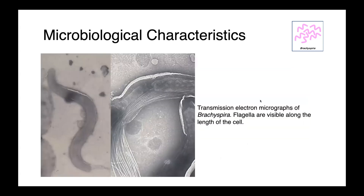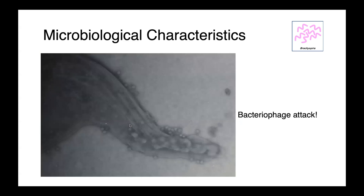Brachyspira are motile, and on these electron micrographs you can see the periplasmic flagella these organisms possess — located within the outer membrane — which allow the organism to move purposefully throughout its environment. These images were captured during a study of a novel and emerging Brachyspira species. It's been previously reported that the number of flagella is characteristic to a given Brachyspira species. This is one of my favorite electron micrographs: a Brachyspira organism infected with phage, showing a very abnormally shaped cell that gets very fat away from the end.